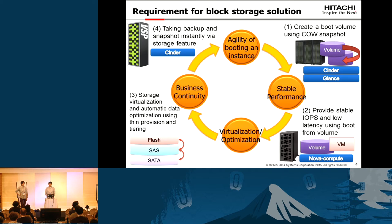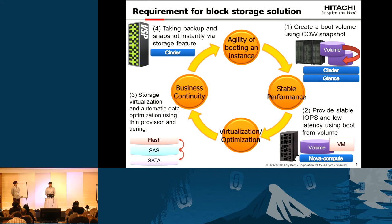Storage virtualization and optimization is important to use backend storage efficiently. As for business continuity, it is important to take a backup and snapshot using a storage feature, such as copy-oriented snapshot. For example, our Hitachi storage has shadow image or thin image features. It provides rapid volume cloning and reduces system downtime. In this session, we will focus on the agility of booting an instance.